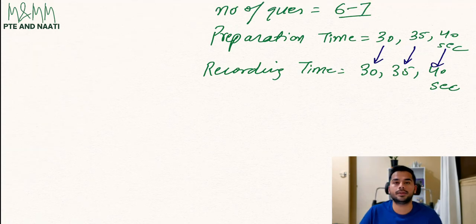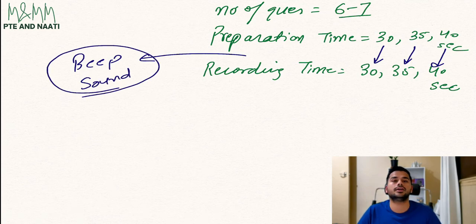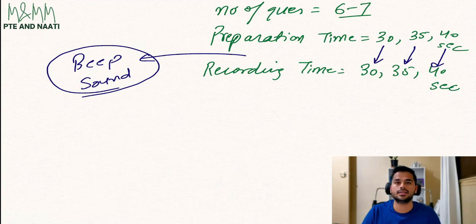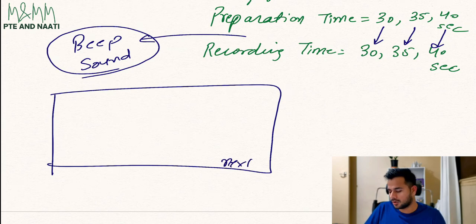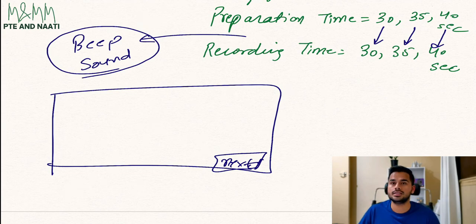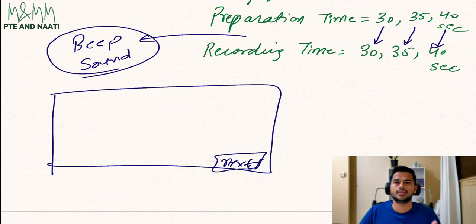Between preparation time and the beginning of recording, there will be a beep sound indicating that recording has started. So once on your screen it says beginning in three, two, one — recording doesn't start straight away; you will hear a beep in your earphones. Once the recording time is over, on the bottom right corner of your exam screen you will have a Next button. Once you're done recording your answer, you can click Next to proceed to the next question. Keep in mind that once you go to the next question in the Pearson exam, you cannot go back. So only click Next if you are definitely sure you are done with the answer.